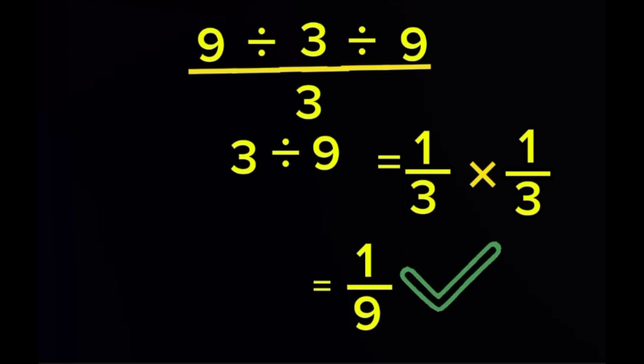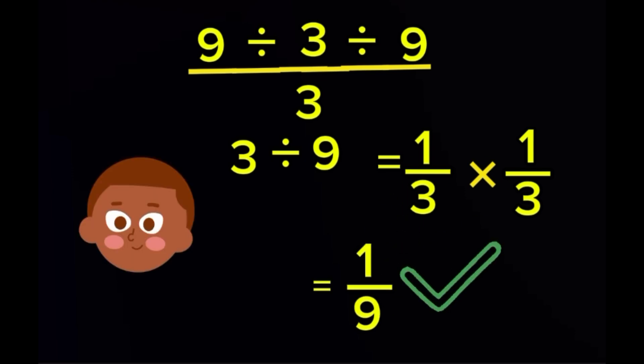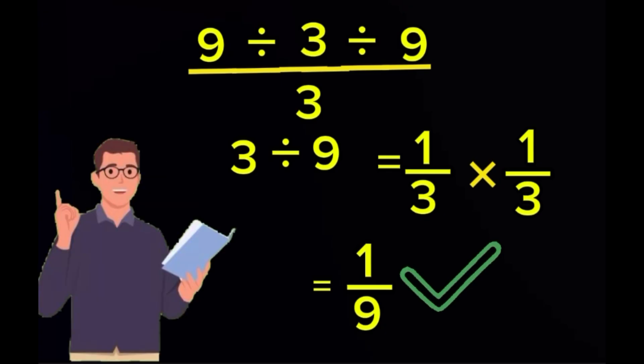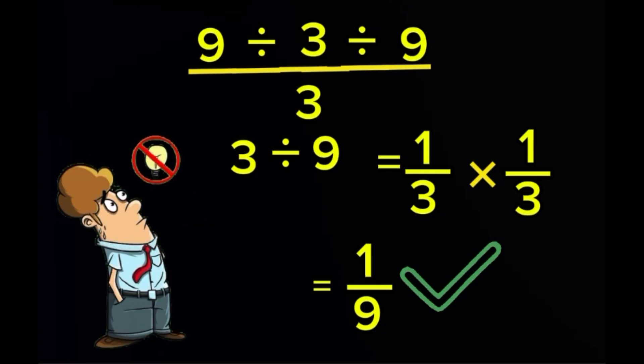That is the correct final answer, even though it feels smaller than what many people expect. If this surprised you, that is actually a good sign. It means your brain is adjusting from guessing to understanding. Most mistakes in mathematics do not come from lack of ability. They come from rushing and skipping rules.